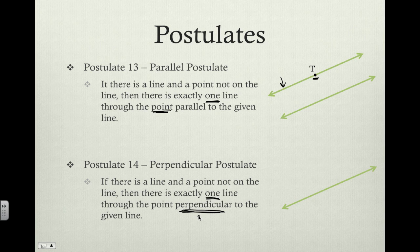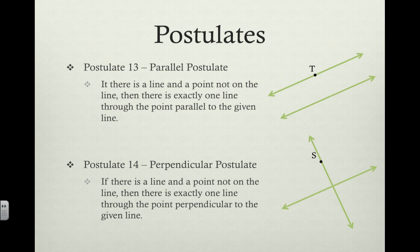So we've got our line, and we've got a point that's not on this line. There is only one line right here that is going to be perpendicular through this point and perpendicular to this line. If we rotate this line around, there's only one line that can go through this point that will be perpendicular to the other line.